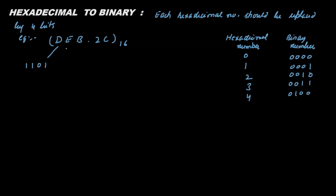E is 14, and 14 in binary is 1110. For the digit D we have 1011, 2 is 0010, and C is 1100.